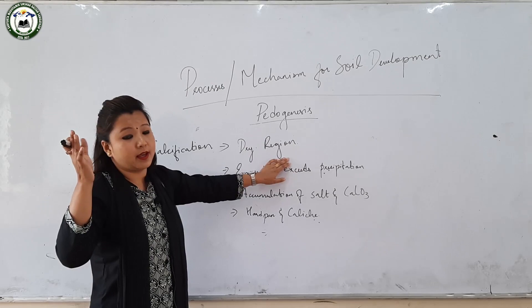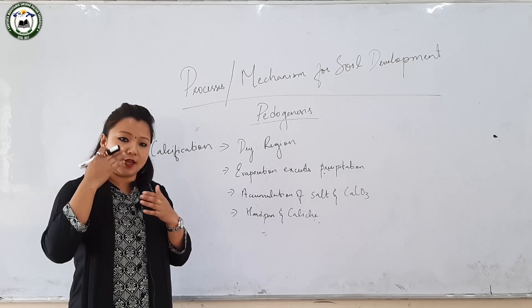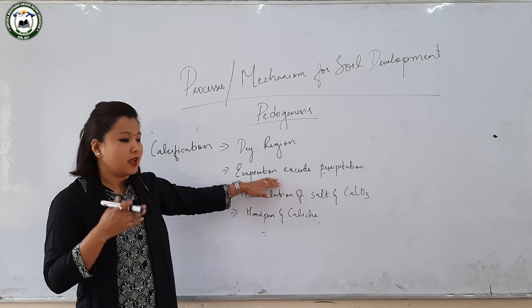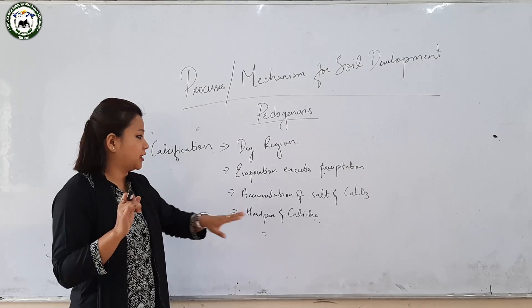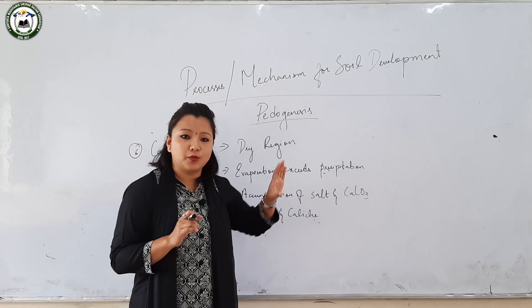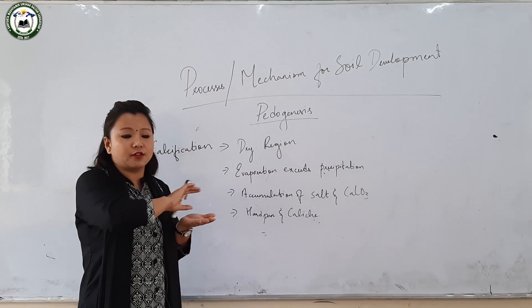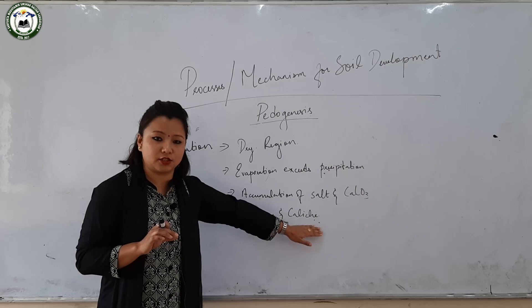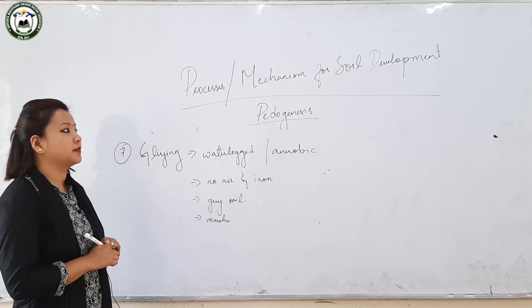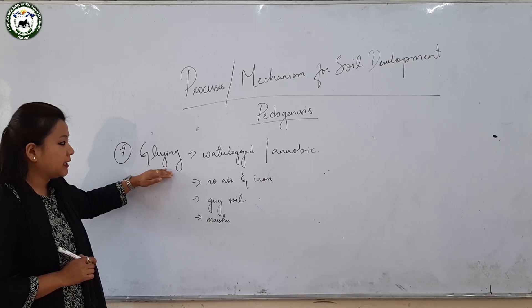Another specific process is calcification. It is mostly profound in dry regions where the temperature is very high and there is less rainfall. When there is less rainfall and a large amount of sunlight, evaporation takes place and exceeds precipitation. When evaporation is in greater amount, the ground is left behind with the accumulation of salt and calcium carbonate. Over a longer period of time, the surface of the earth becomes covered with a whitish crust of salt and calcium carbonate, termed hardpan, and this refers to the process of calcification.